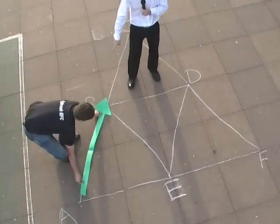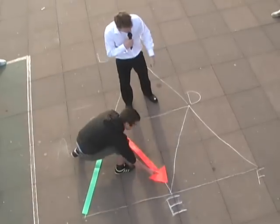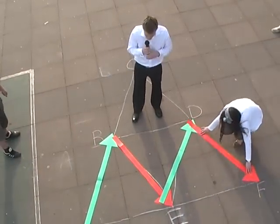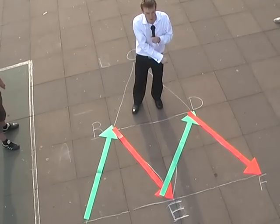AB in, BE in, ED in, and DF in. We've got two greens, two reds.